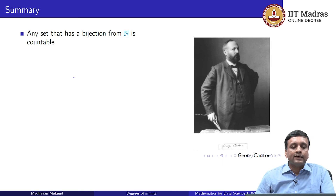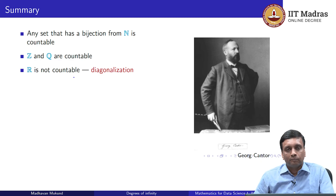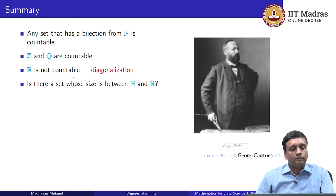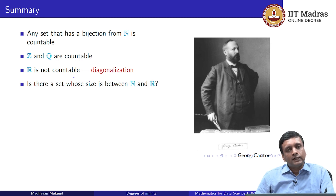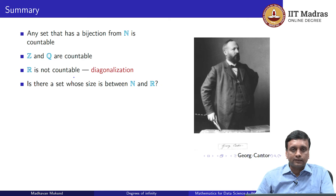To summarize: any set that has a bijection from N is called a countable set. We showed that the set of integers and the set of rationals are countable by describing a strategy to enumerate them. Cantor's diagonalization argument — building the diagonal sequence — shows that the set of real numbers is not countable. Notice: if R is not countable but Q is countable, and we created R by adding irrational numbers to Q, then the set of irrational numbers must itself be uncountable, because we cannot take two countable sets and get an uncountable set. In other words, there are vastly more irrational numbers than there are rational numbers.